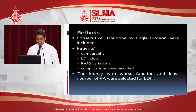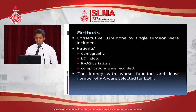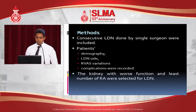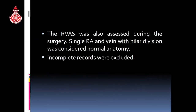Consecutive live donor nephrectomies done by a single surgeon were included. Patient demographics, live donor nephrectomy site, and renal vascular arterial variation complications were recorded. The kidney with worse function and the least number of renal arteries of the donor were selected for live donor nephrectomy. The renal vascular anatomical variations were also assessed during surgery. Single renal artery and vein with higher division was considered normal anatomy. Incomplete records were excluded.